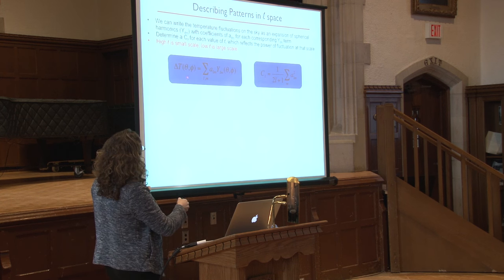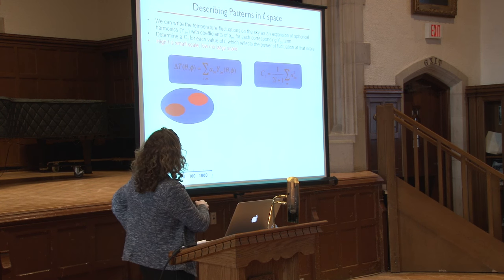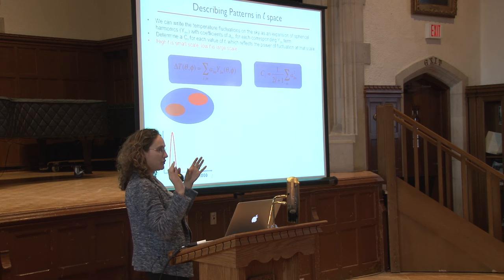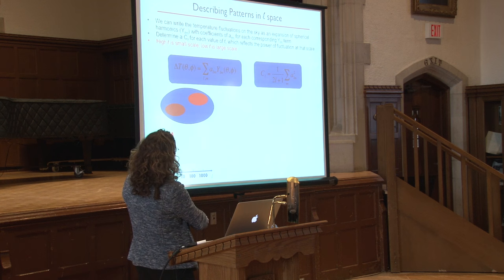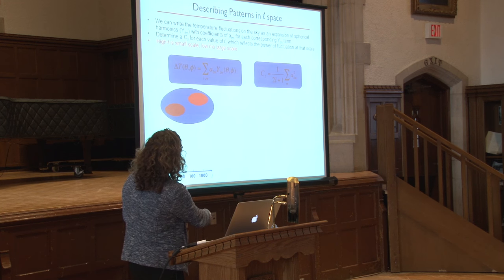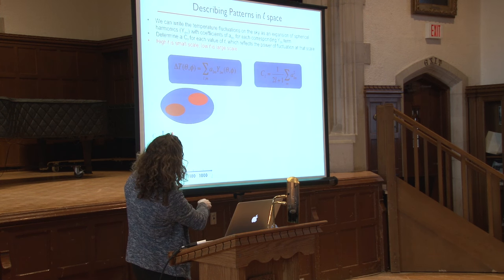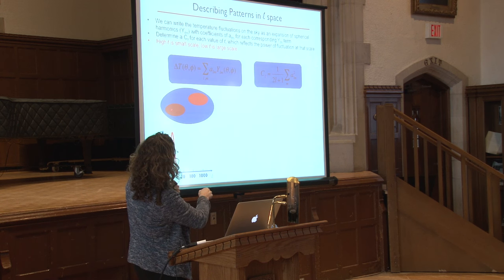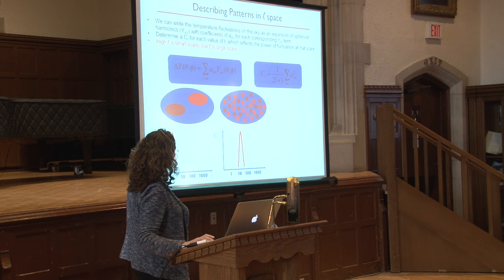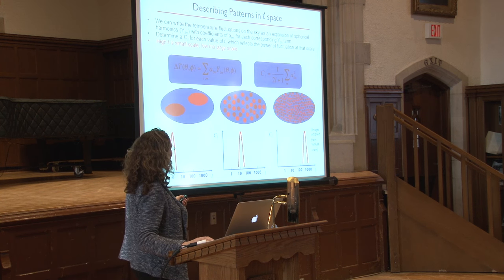You can compute how much fluctuation power — how much variation — there is between two locations as a function of the quantity l, where l is basically how big your angular scale is. As you go to higher l, you're probing smaller angular scales; lower l probes larger ones. The y-axis shows how much power is at that scale, with large blobs corresponding to the first peak and smaller and smaller scales probed as l increases.